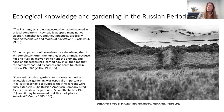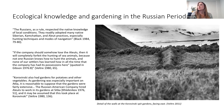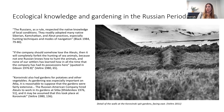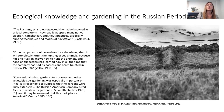A Russian naval captain quoted in Veltri, 1980, stated: 'If the company should somehow lose the Aleuts, it will completely forfeit the hunting of sea animals because not one Russian knows how to hunt the animals, and none of our settlers has learned how in all the time the company has had its possessions here.' Veltri also says that Korovinsky had gardens for potatoes and other vegetables, and that the Russian American Company hired Aleuts to work in its gardens at Sitka — it may be assumed this took place at Atka as well. What agricultural knowledge was brought by these laborers? Who were these laborers, and what was their gender? These questions are lost from archival documentation.